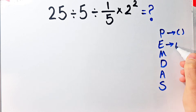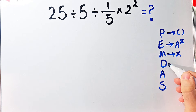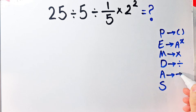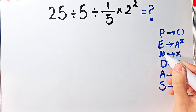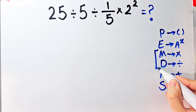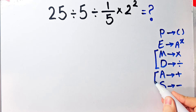E stands for Exponent, M stands for Multiplication, D stands for Division, A stands for Addition, and S stands for Subtraction. Multiplication and division have the same level of priority, and addition and subtraction also have the same level of priority.